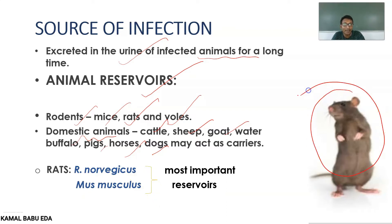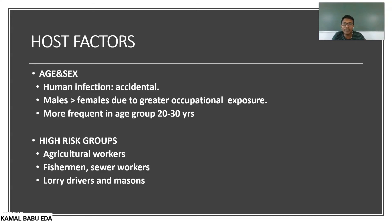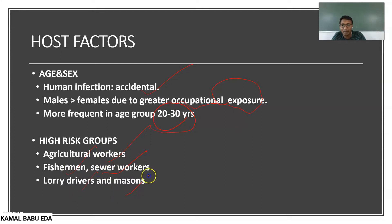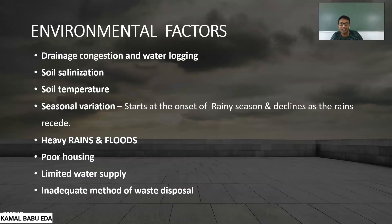Coming to host factors, males are more prone to get this disease than females as they have greater occupational exposure. Human infection is very accidental, and the age group most frequently affected is 20 to 30 years. The high-risk groups include agricultural workers, fishermen, sewer workers, lorry drivers, and masons — these are the persons most at risk for this infection.